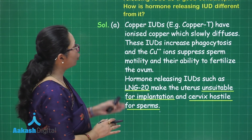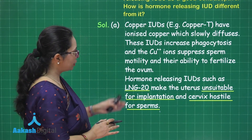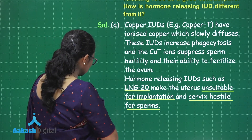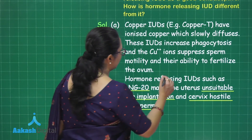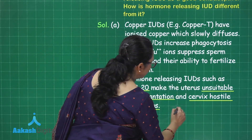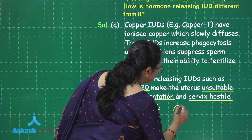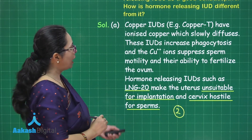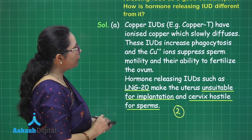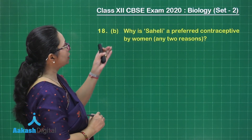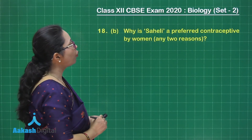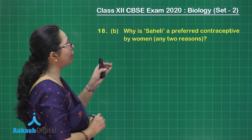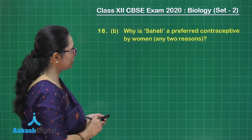This part of the question is worth two marks. So out of the total three marks for question 18, two marks are allotted for part A. Part B of the question asks: why is Saheli a preferred contraceptive for women? Give any two reasons.